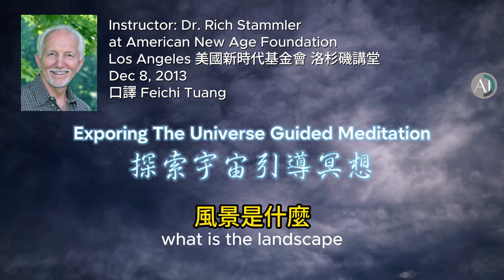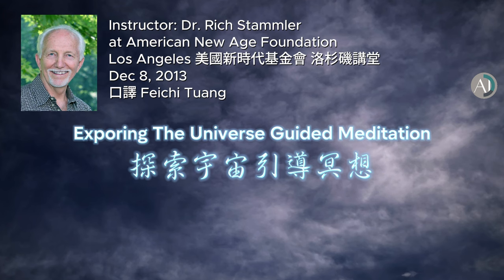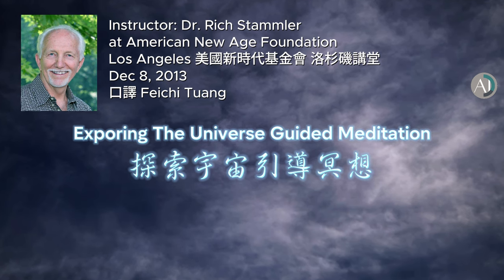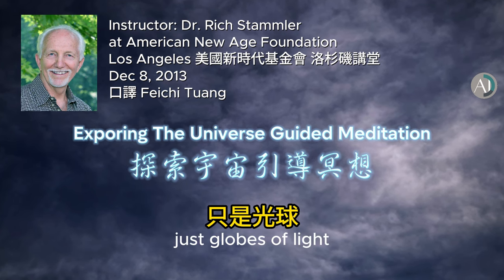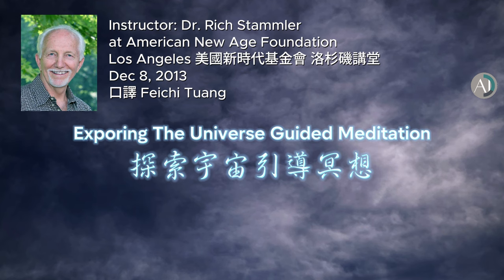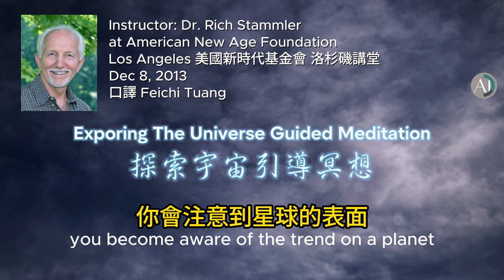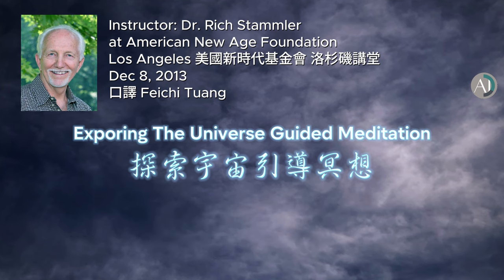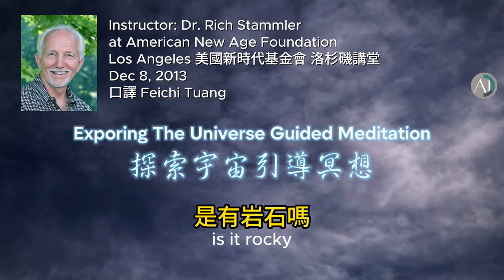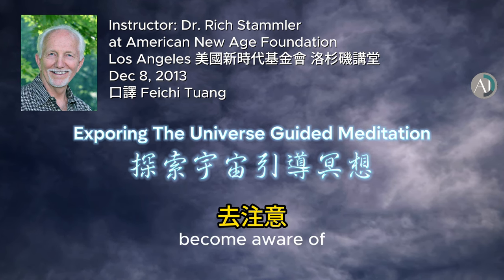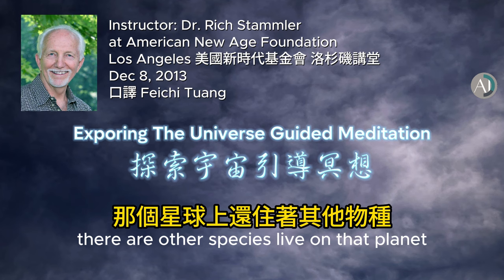What is the landscape? If it is space, you may become aware of energy forms — perhaps light beings, just globes of light. Or if it is a planet, you become aware of the terrain on the planet. Is it rocky? Is there a form of vegetation? Become aware of whether there are other species alive on that planet.